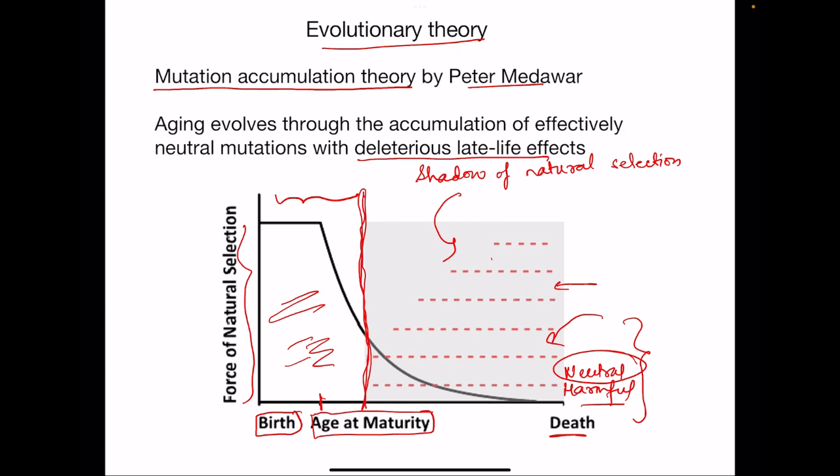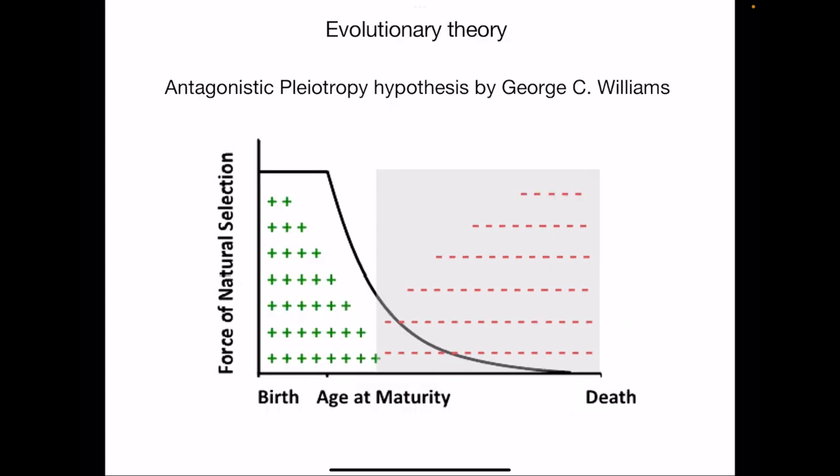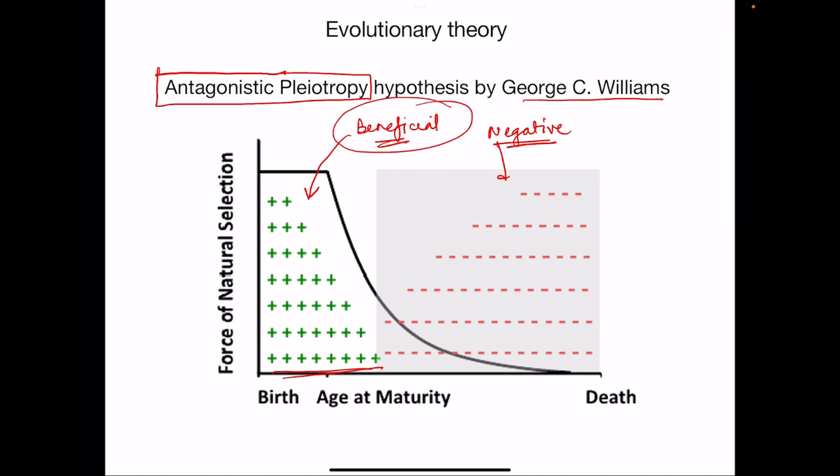This theory was improved upon by another theory given by John C. Williams known as antagonistic pleiotropy. What is antagonistic pleiotropy? It says that mutations which are beneficial early in life and have late life negative effects are the ones happening because, by virtue of being beneficial in reproductive age, the same virtue makes them harmful later in life. That is why the term antagonistic.